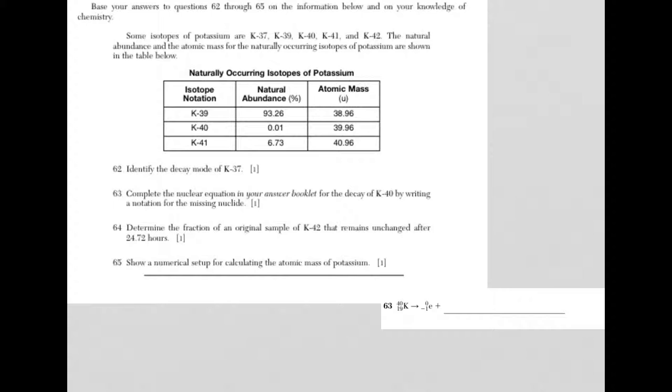Let's take a look. Question 62, identify the decay mode of potassium-37. Now, this isn't something that you have to memorize. And you'll notice that the information for questions 62 through 65 starts here. But if you go back and read it and look at the headings for the data table, you realize there's no decay mode here. So that means it's in the reference tables. Start taking a look in the reference tables. If you haven't found it, maybe pause the video again and see if you can find it.